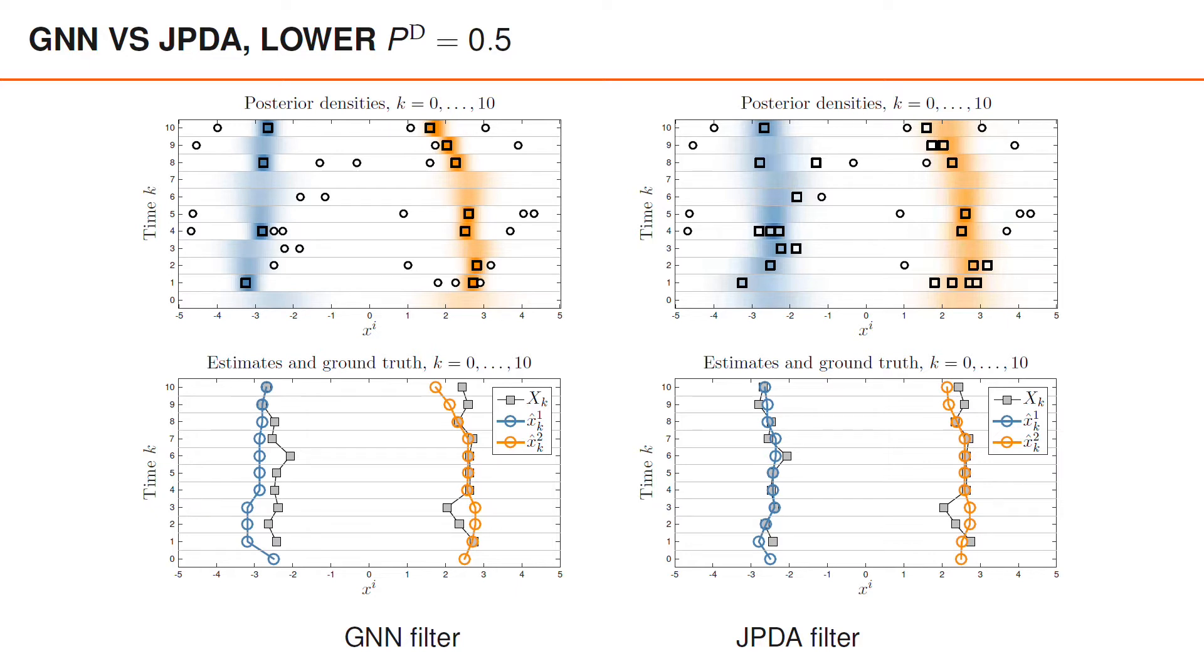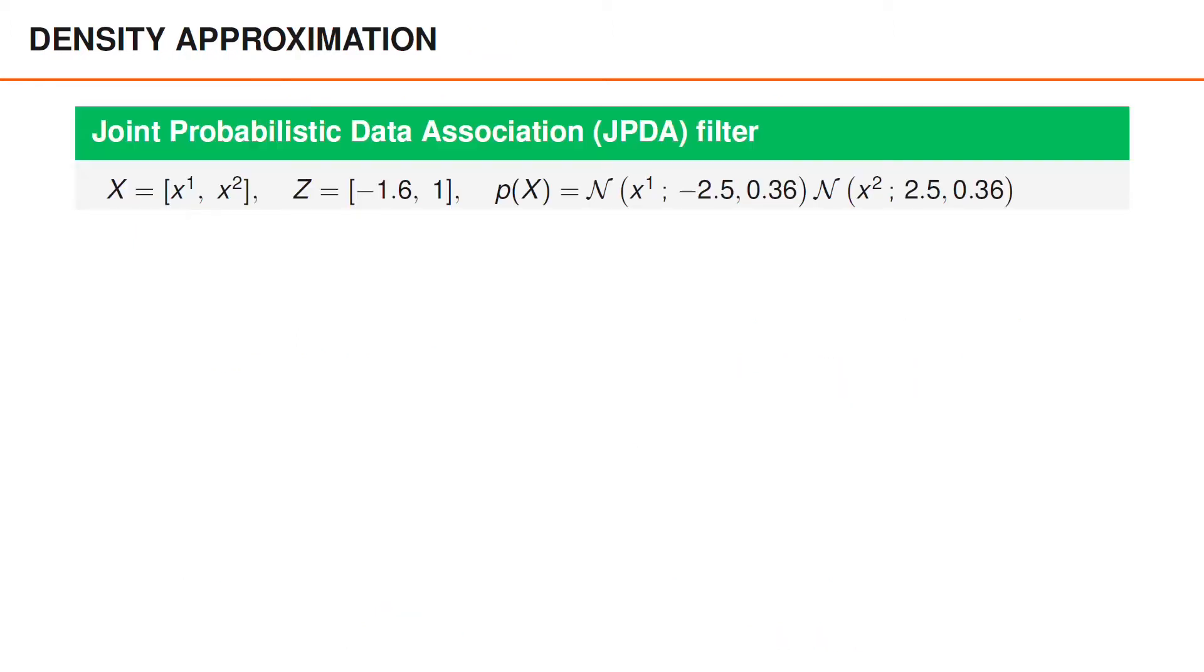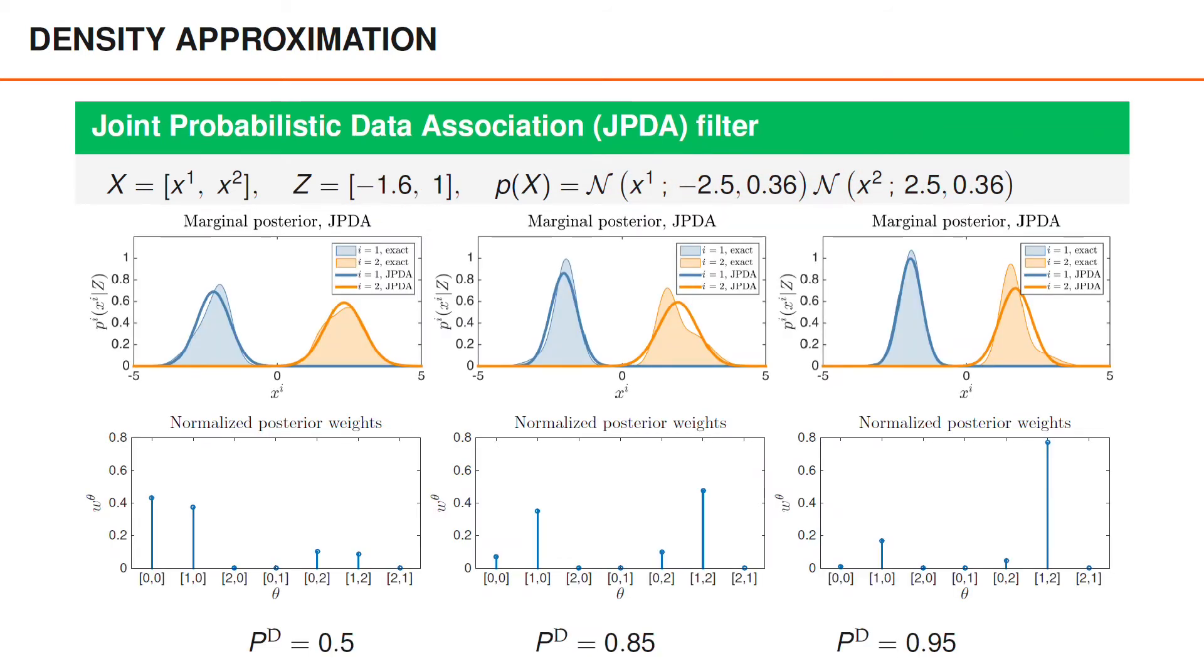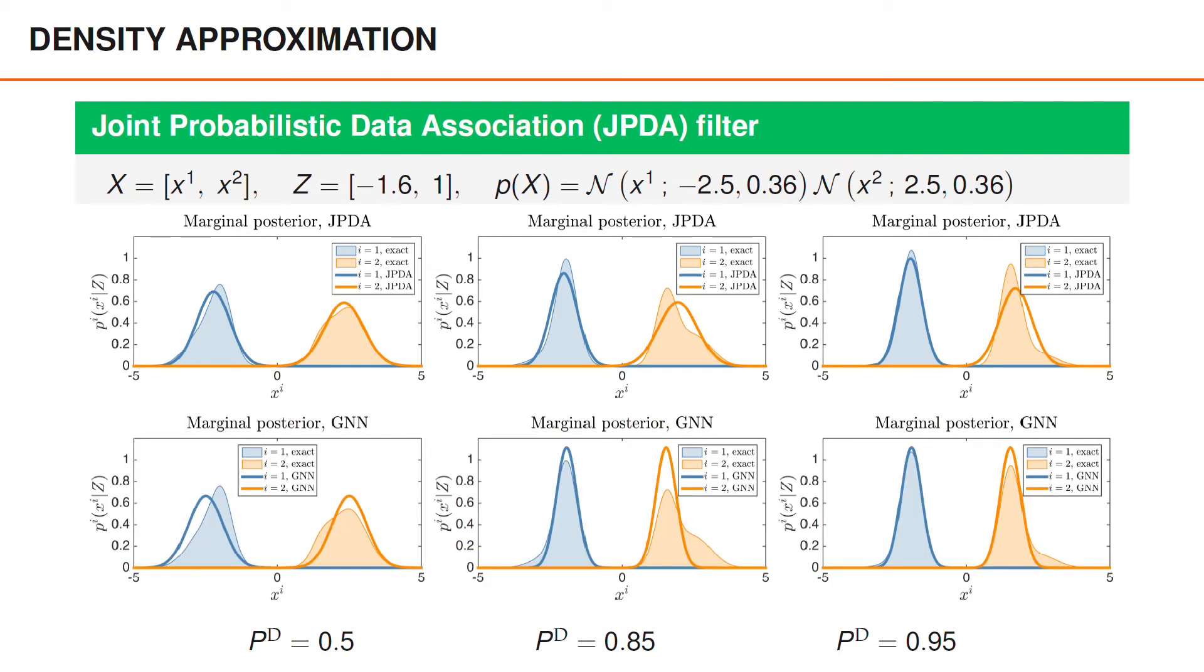As a last example, let's take the density approximation for the scenario with two objects, two measurements, minus 1.6 and 1, and a Gaussian prior. For JPDA, we get the results shown here. For all three values of PD, we can see that there is some difference between the exact posterior and the JPDA approximation. But in general, for this particular example, the approximation is fairly good. If we compare it to the GNN results, then we see that for these three examples, JPDA is slightly better, and this is especially true when PD is equal to 0.5.